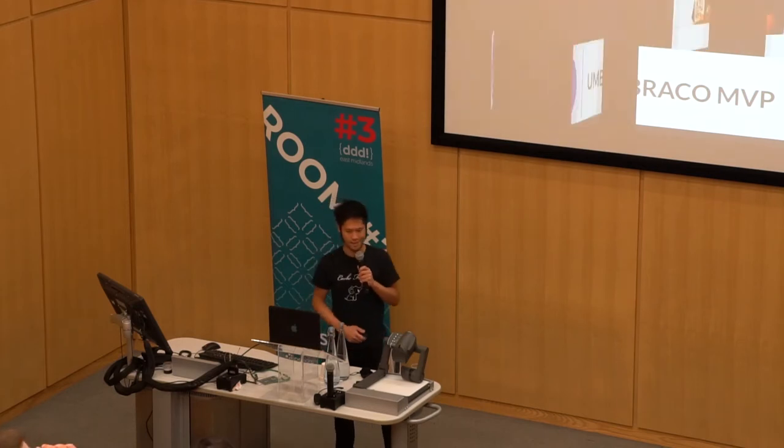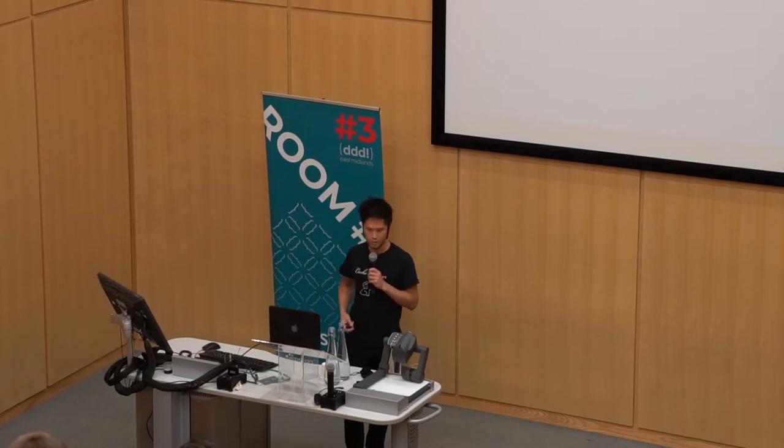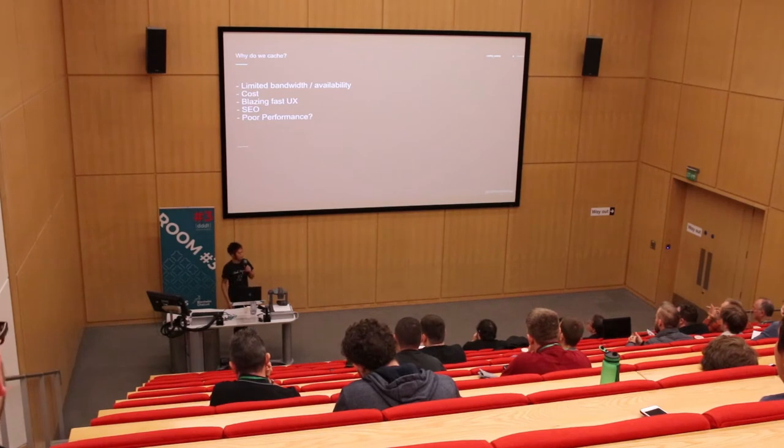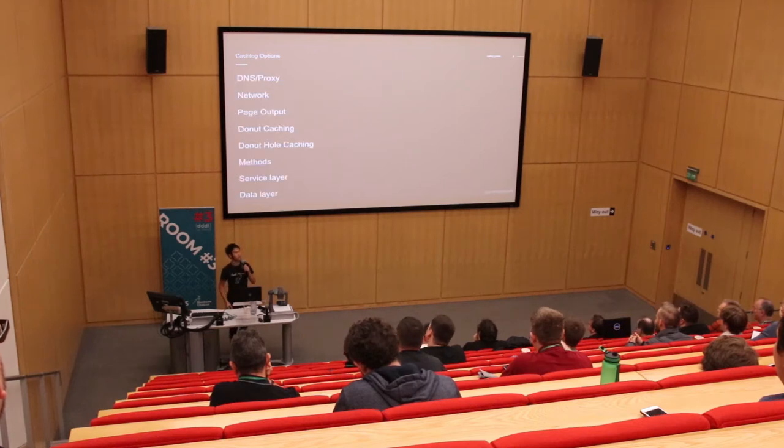So why do we do caching? Many different reasons. Sometimes we want to deal with limited bandwidth or availability. Sometimes cost - if anyone's dealt with the Google Maps API recently they'll see that it's gone up significantly in cost. We want fast UX, good SEO - Google recommends your application responds within 200 milliseconds. But if you have poor performance, caching is not the answer; you need to deal with your architecture.